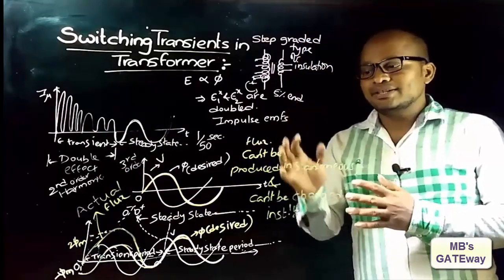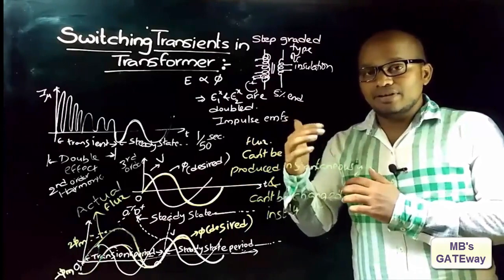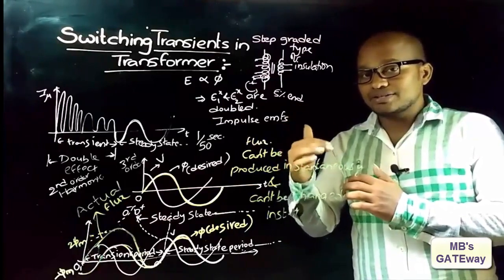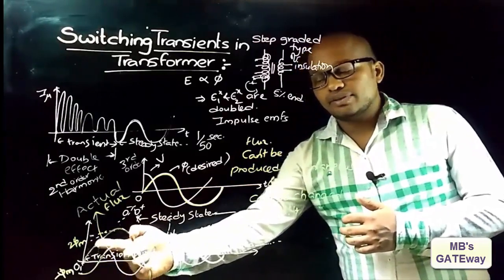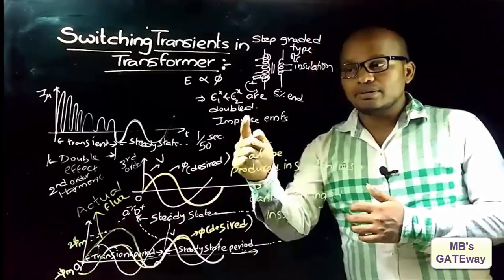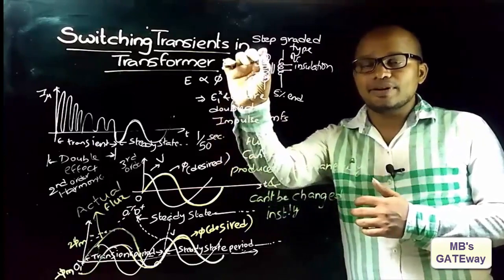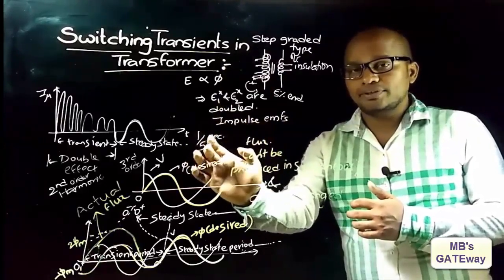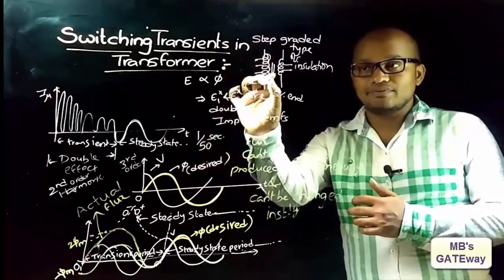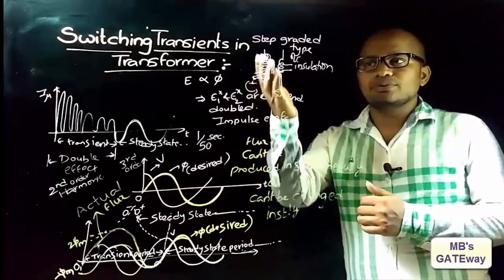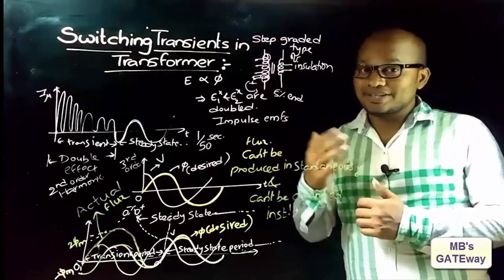In conclusion, to have less severe switching transitions, switching operations must be done at the peak value of voltage, whereas maximum severity occurs if tap changing happens at the zero voltage instant. If switching takes place at the zero instant, flux reaches a maximum value of 2φm, producing double impulse EMFs that exist at the extreme 5% ends of the transformers for only 1/50th of a second. To protect those ends, step-graded insulation is used.